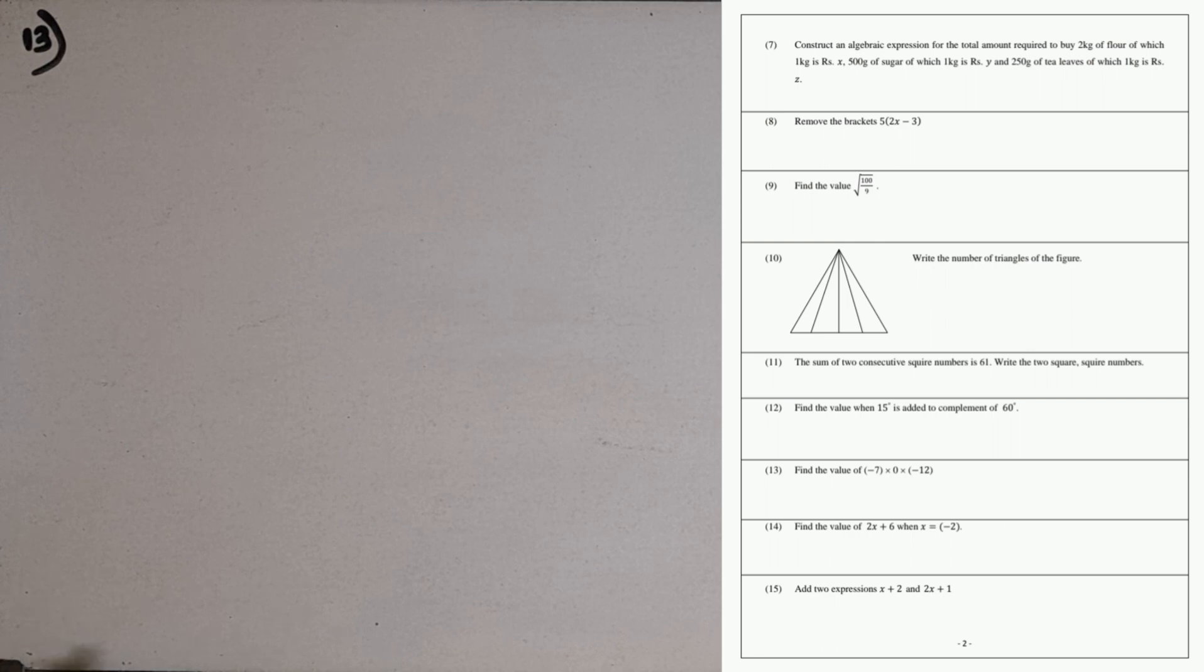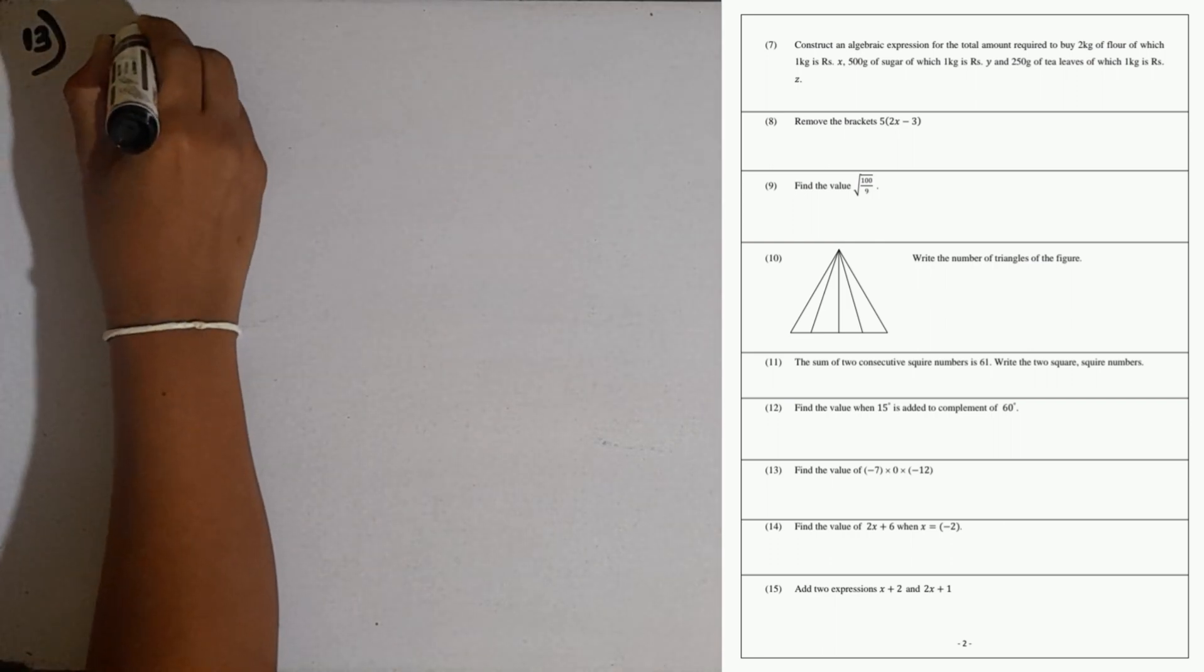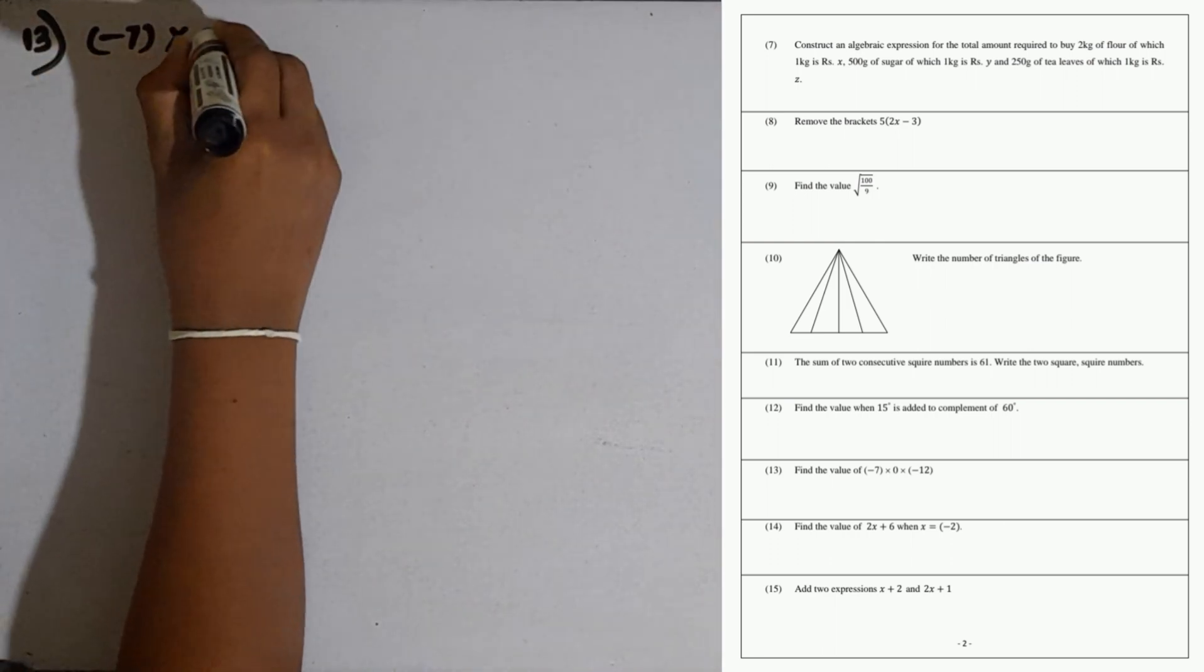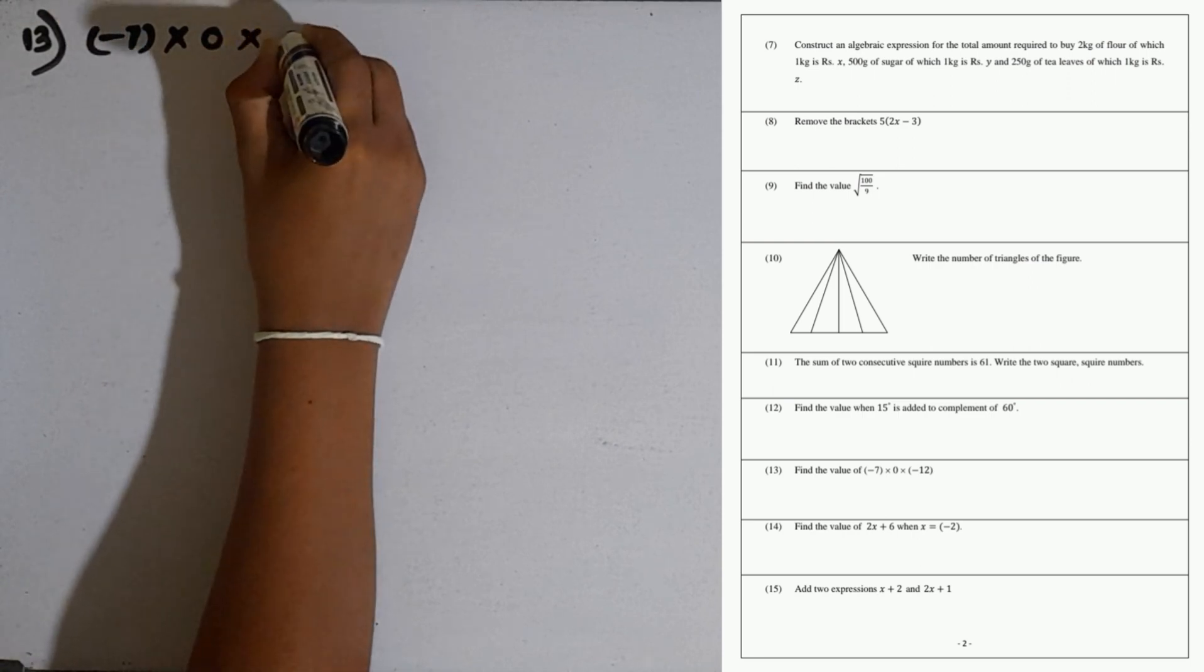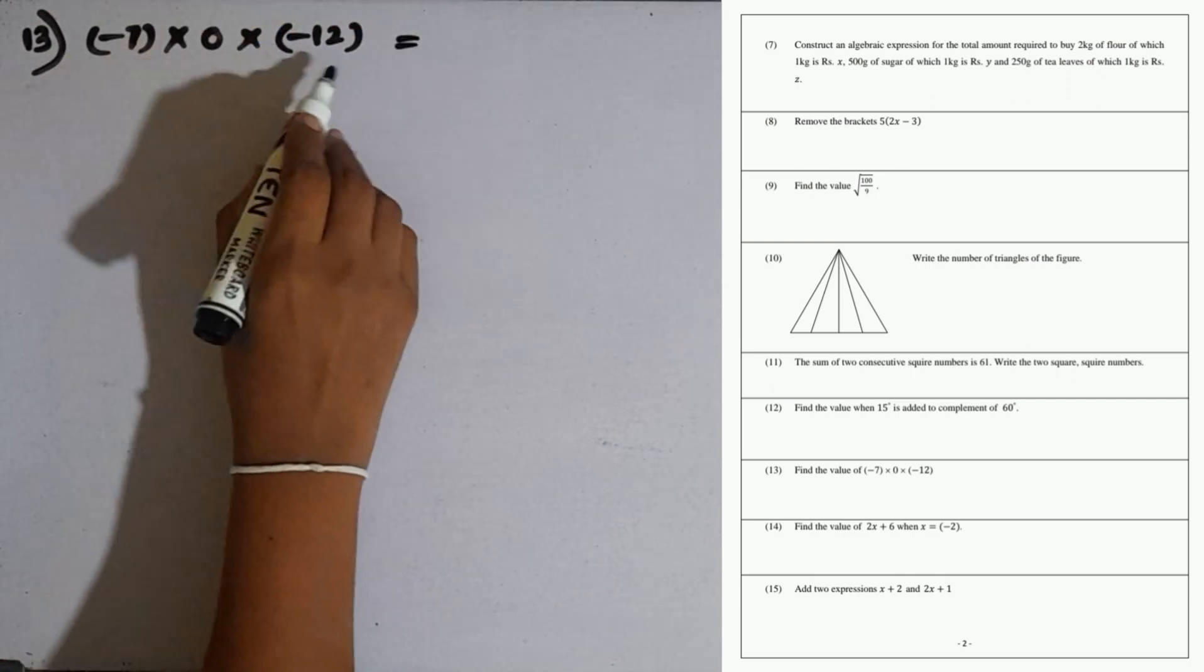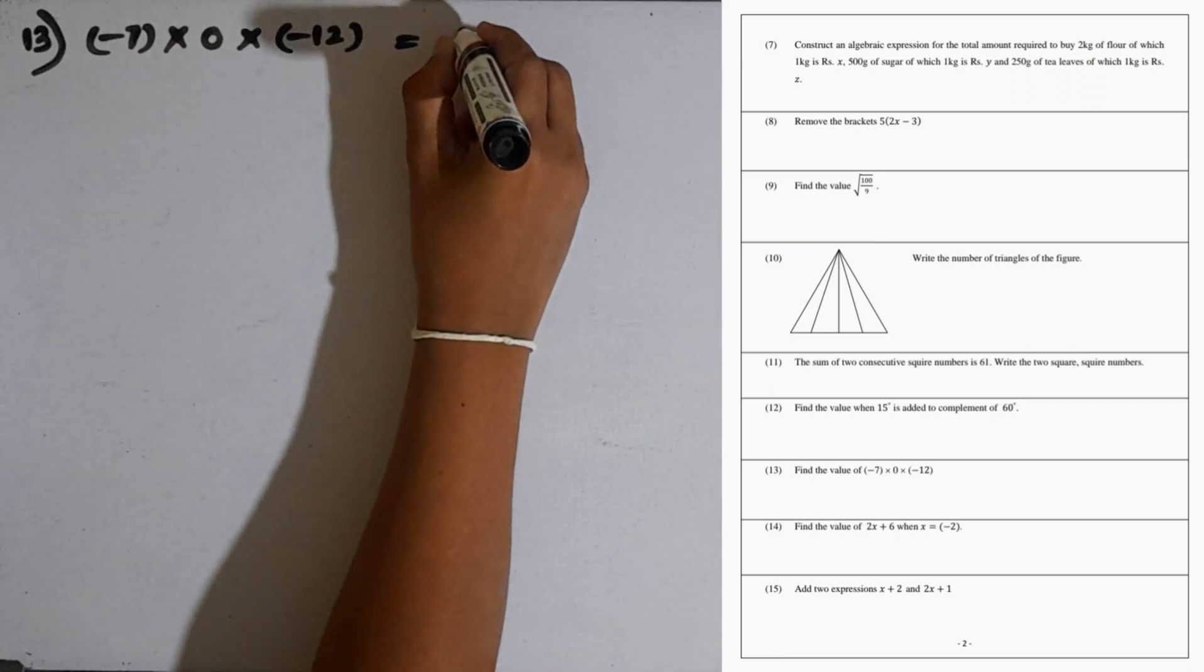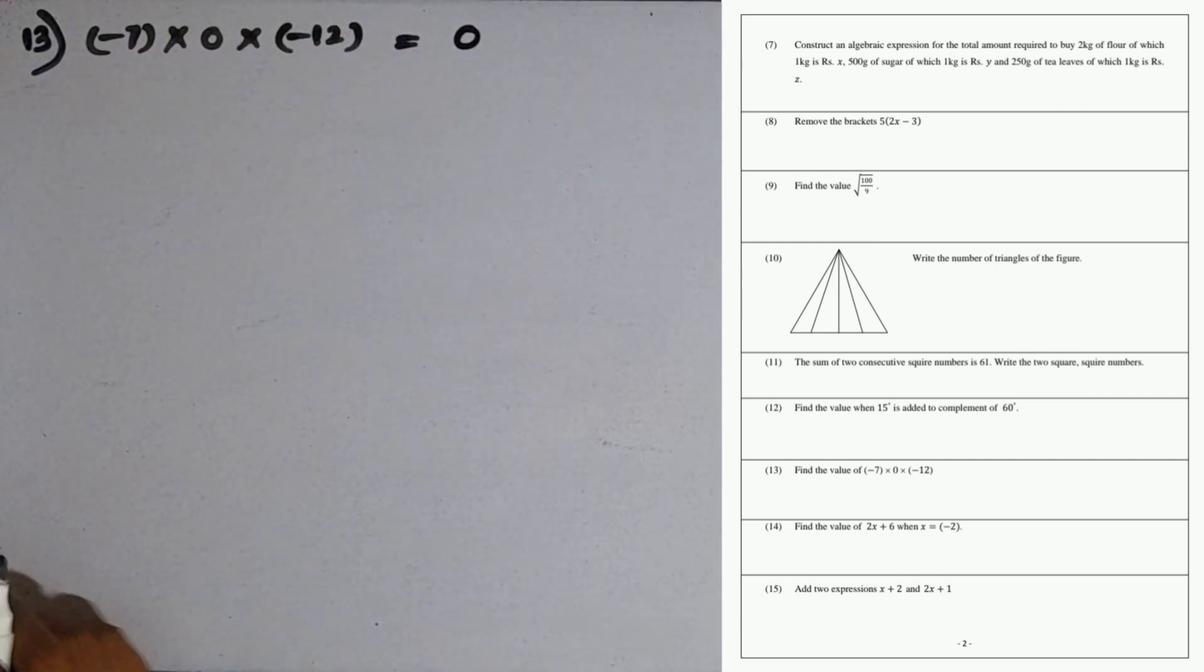Question number 13: find the value of minus 7 into 0 into minus 12. If you multiply any number by 0, you get 0 as the answer. So answer is 0, no need to multiply these 2.